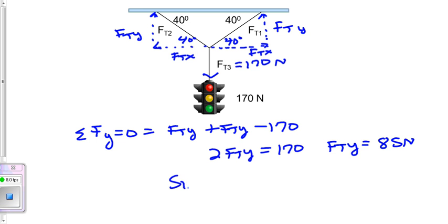So sine of 40 is then going to equal my force tension y, 85, divided by my hypotenuse, which is force tension. And then basically 85 divided by the sine of 40, and that is 132 newtons. And that is what our force tension 1, then force tension 2, are equal to.